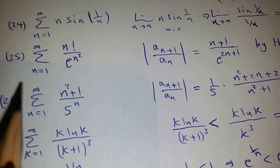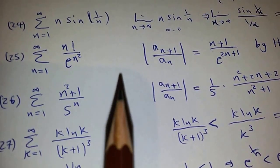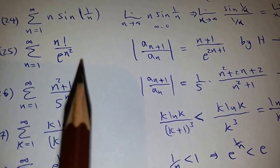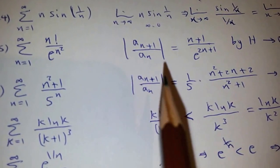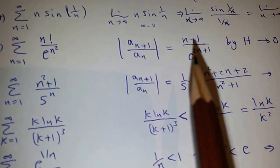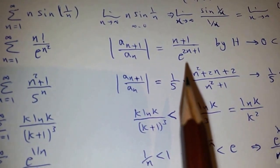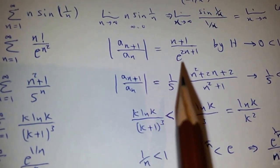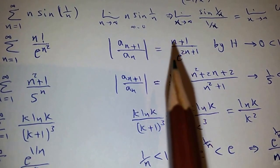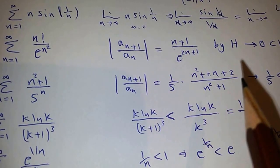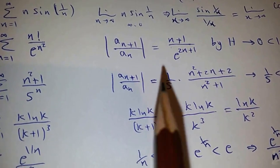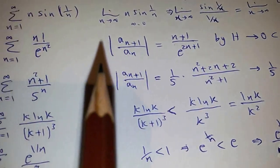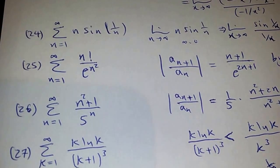For this series, you can use the ratio test because you have powers and factorial. This is the absolute value of A_{N+1}/A_N. Use L'Hôpital's rule to find the limit, and prove that the limit is 0, which is less than 1. So this series is absolutely convergent.